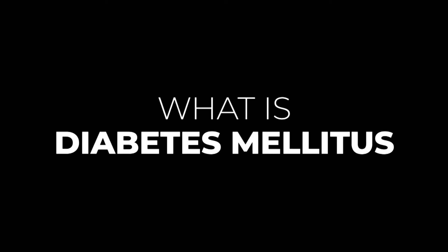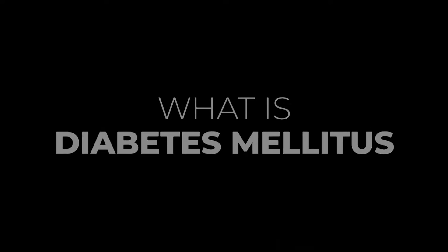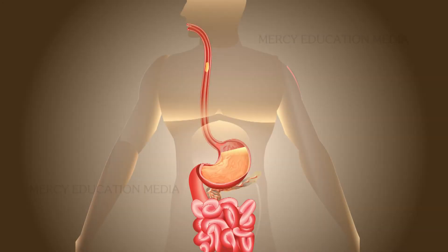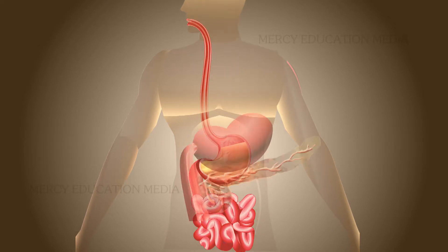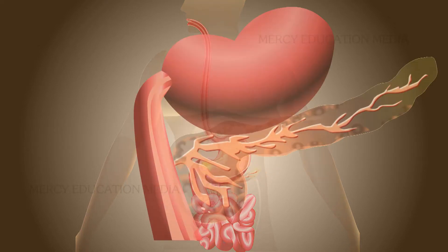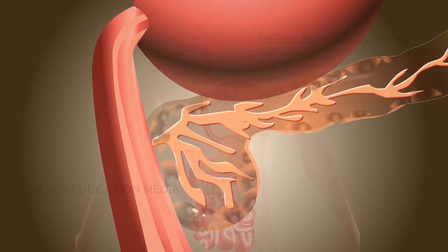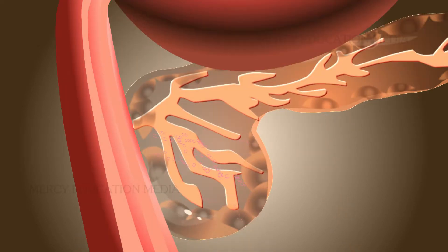What is diabetes mellitus? Diabetes mellitus is the metabolic disorder of carbohydrate metabolism caused by insufficient or nil production of the hormone insulin by the pancreas.